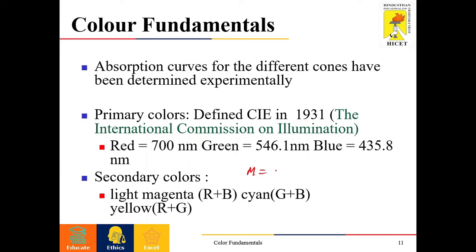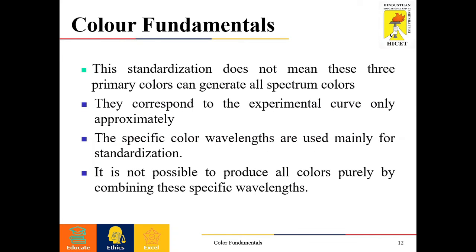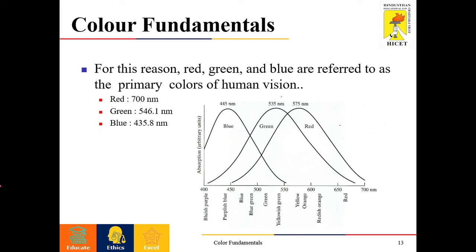Any two of these primary colors may produce secondary colors such as light magenta, cyan, and yellow. Light magenta is the combination of red and blue; cyan is the combination of green and blue; and yellow is the combination of red and green. The standardization of red, green, and blue does not mean these three primary colors can generate all colors — they correspond to the experimental curve only, and it is not possible to produce all colors purely by combining these three wavelengths. For this reason, red, green, and blue are referred to as primary colors of human vision.